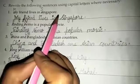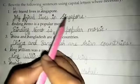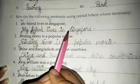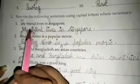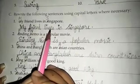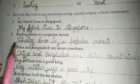Rest will be same: My friend lives in Singapore. Only M and S you will rewrite — the rest will be same. My friend lives in Singapore.